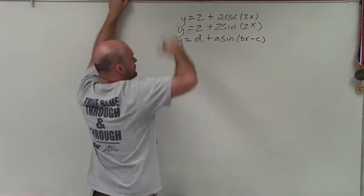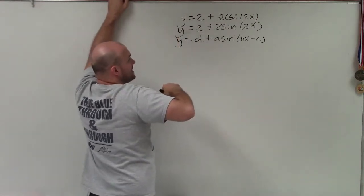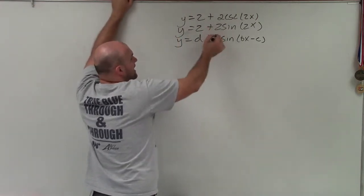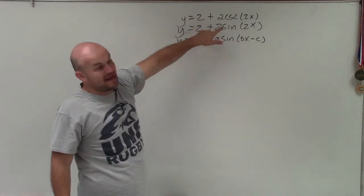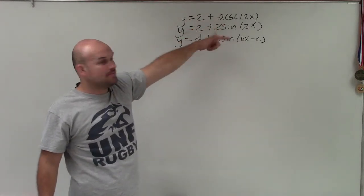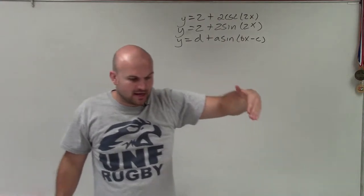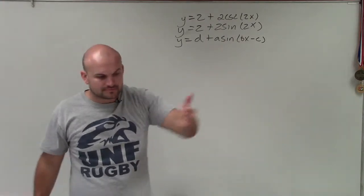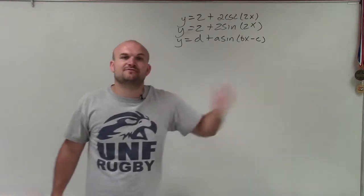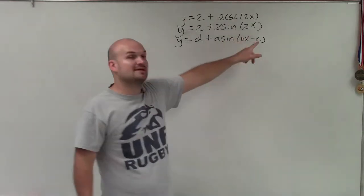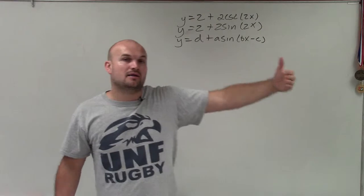Where d tells you if we're going to have a vertical shift — in this case you can see 2, so my graph is going to shift up by 2. A is going to tell me if there's a reflection as well as my amplitude, where my amplitude is 2. And bx minus c: b affects the period, and c affects if there's a shift left or right. So I have 2x, therefore my period is going to be changed.